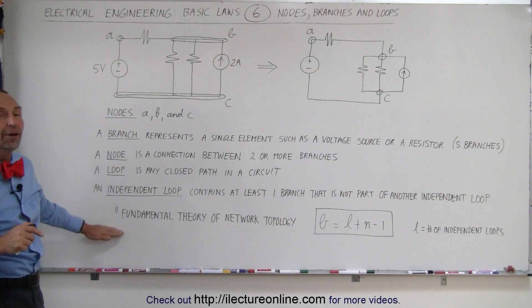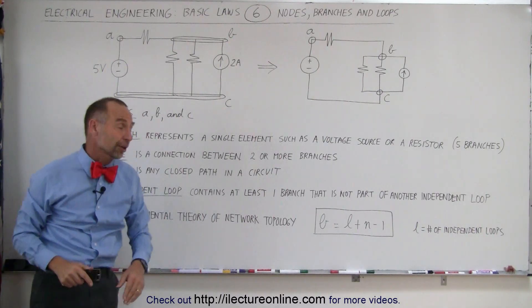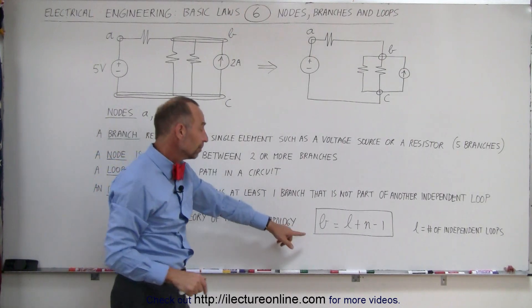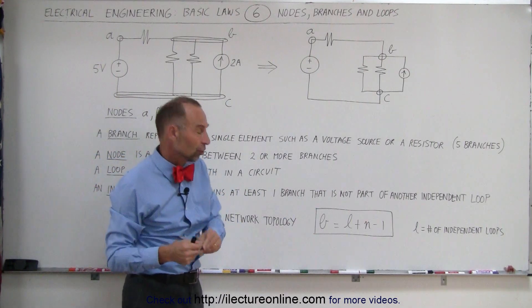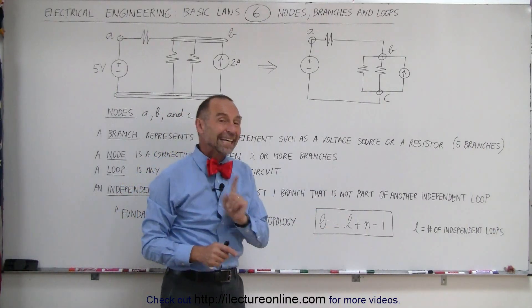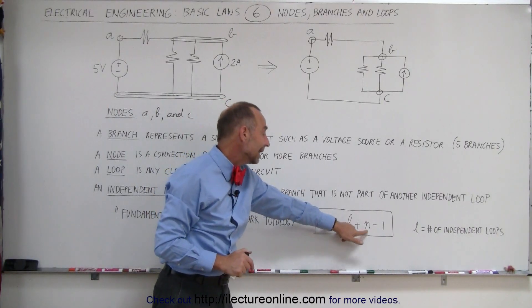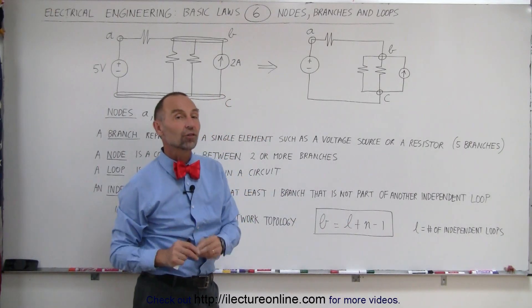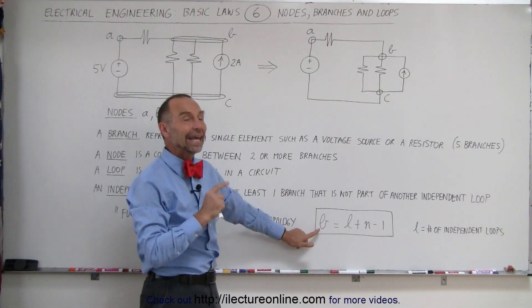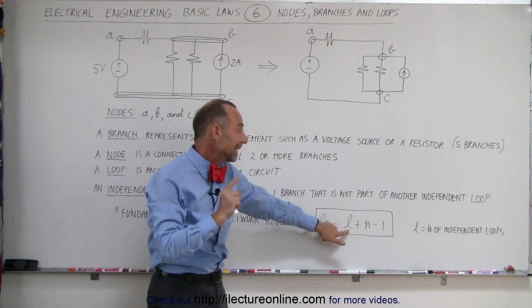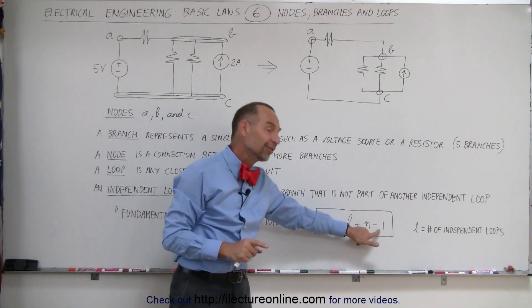At this point we can define what we call the fundamental theory of network topology. Here we have an equation. On the left we have the letter B that represents the number of branches. L represents the number of independent loops, not just the number of loops but the number of independent loops, and N represents the number of nodes in the circuit. The equation is always correct to say that the number of branches in any circuit is equal to the number of independent loops plus the number of nodes minus one.